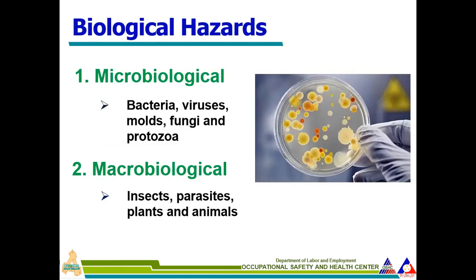Biological hazards include micro-biological hazards — bacteria, viruses, molds, fungi, and protozoa, such as COVID-19 and influenza — and macro-biological hazards, which are larger organisms like insects, parasites, plants, and animals. Micro-biological hazards are generally invisible to the naked eye and require a microscope to see, while macro-biological ones are visible.